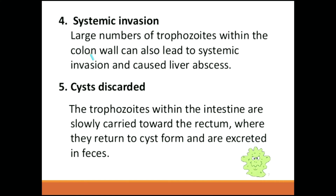The fourth step is systemic invasion — penetrating any kind of membrane. A large number of trophozoites within the colon cells can lead to systemic invasion and cause liver abscesses, going to the systemic circulation and infecting the liver. The fifth step is cyst excretion — trophozoites within the intestine are carried towards the rectum where they return to cyst form and are excreted in faeces.